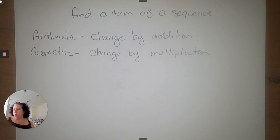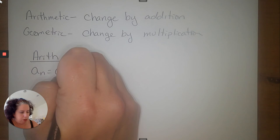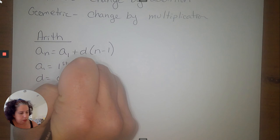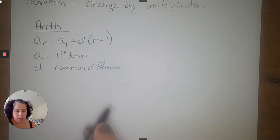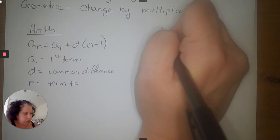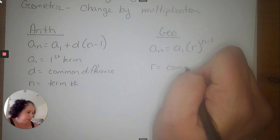We have two formulas we need to use. Our arithmetic formula is a_n equals a1 plus d times (n minus 1). Here, a1 is the first term, d is the common difference, and n is the term number you're looking for — so if you want the 40th term, 40 goes in for n. The geometric formula is a_n equals a1 times r to the (n minus 1) power, where r is the common ratio.